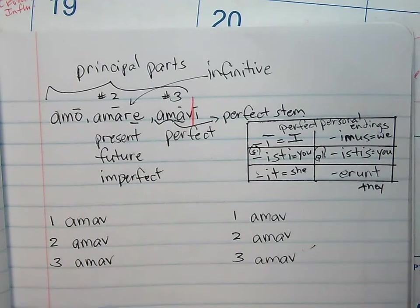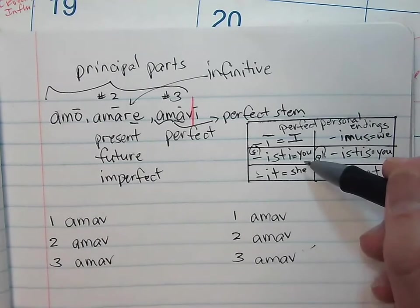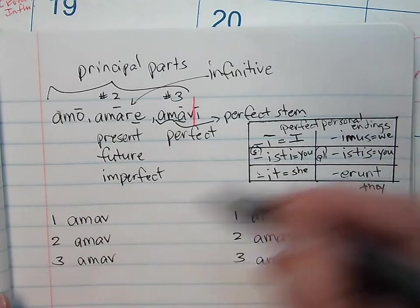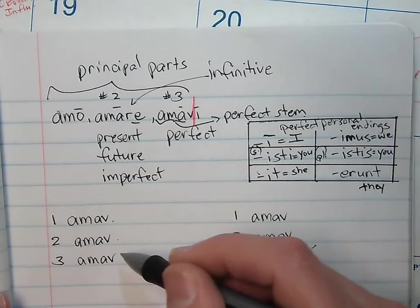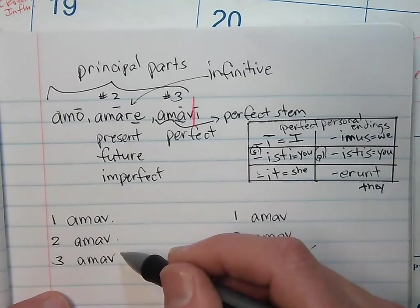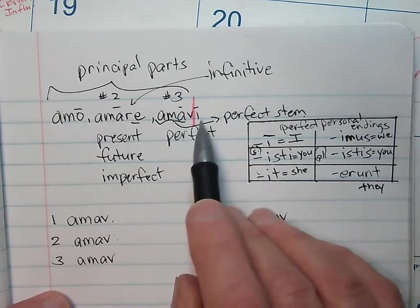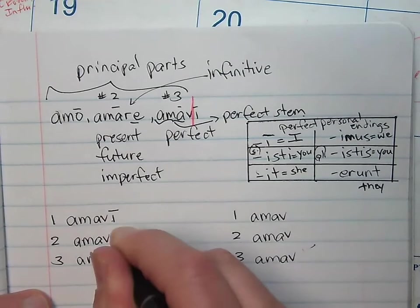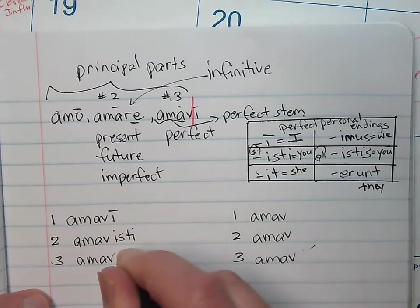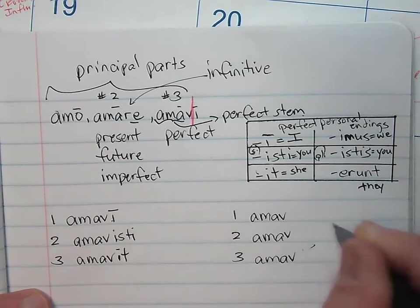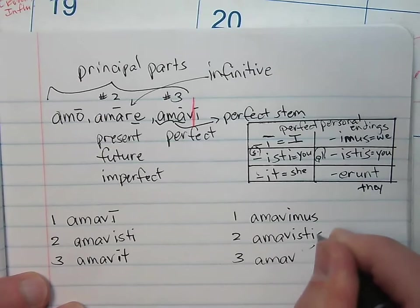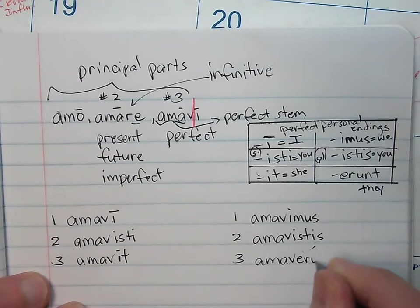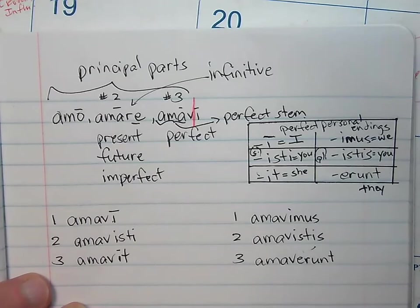You've got to learn these six. Now, all you've got to do is take these endings right here and add them one by one to your perfect stem. What was the perfect stem, Mr. Darden? Third part minus the I. So here we go: i, isti, it, imus, istis, erunt. Just like that.